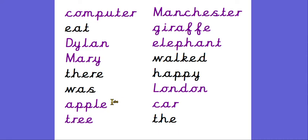Apple and tree are both nouns because those words are the names of objects or things. Manchester is a noun because it is the name of a place — the capital letter tells me it's the name of a real place. Giraffe and elephant are both words that are the names of animals, so they are nouns too. The word London is the name of a real place — it starts with a capital letter. The last noun on my board is the word car — 'a car', that is the name of an object. Don't worry if you didn't get them all; this kind of thing is super tricky.